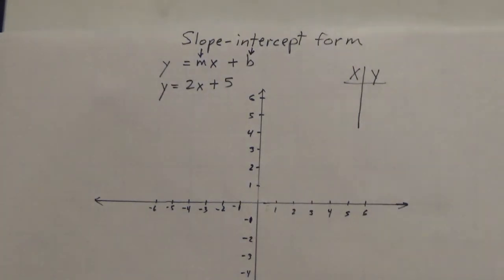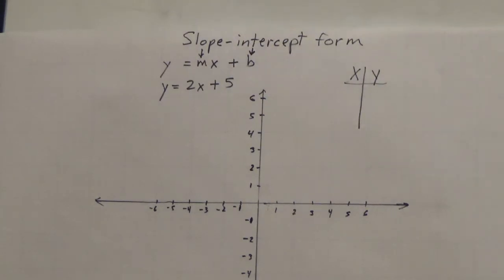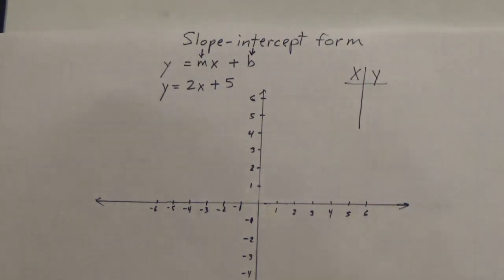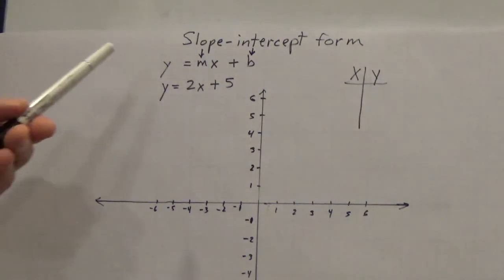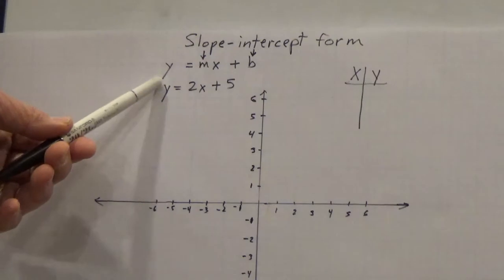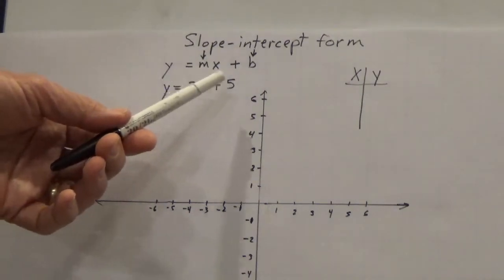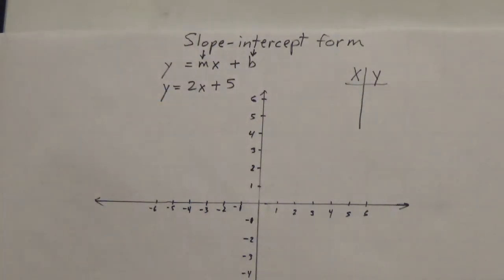Welcome to Math with Martin Frank. We're looking today at the slope-intercept form of a line. The standard form for slope-intercept is y equals mx plus b.